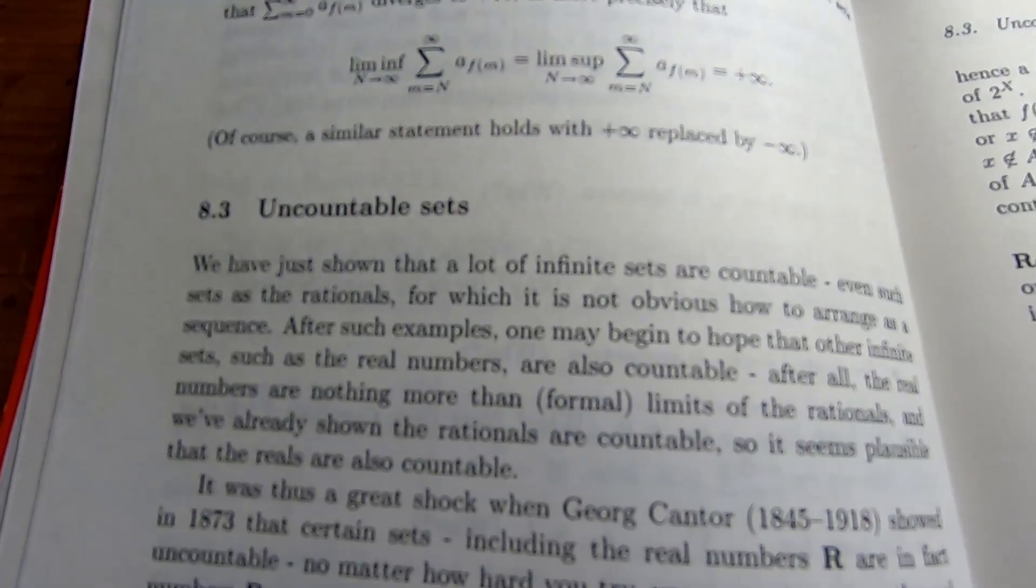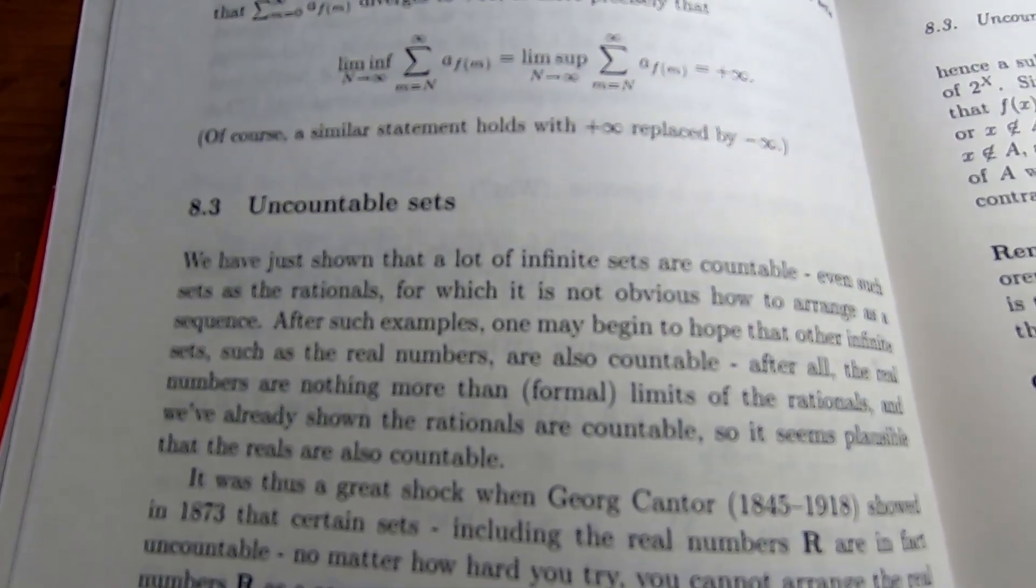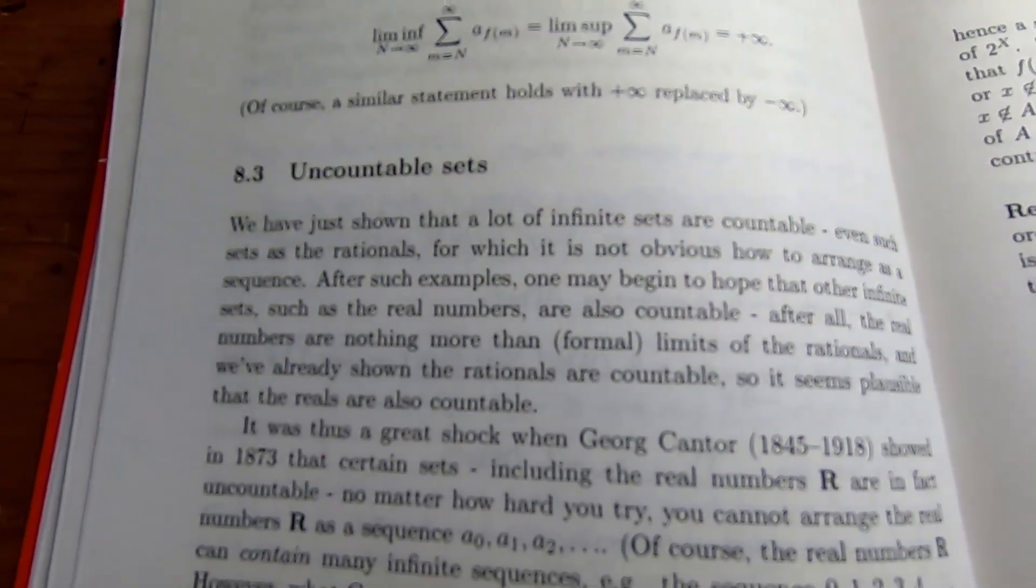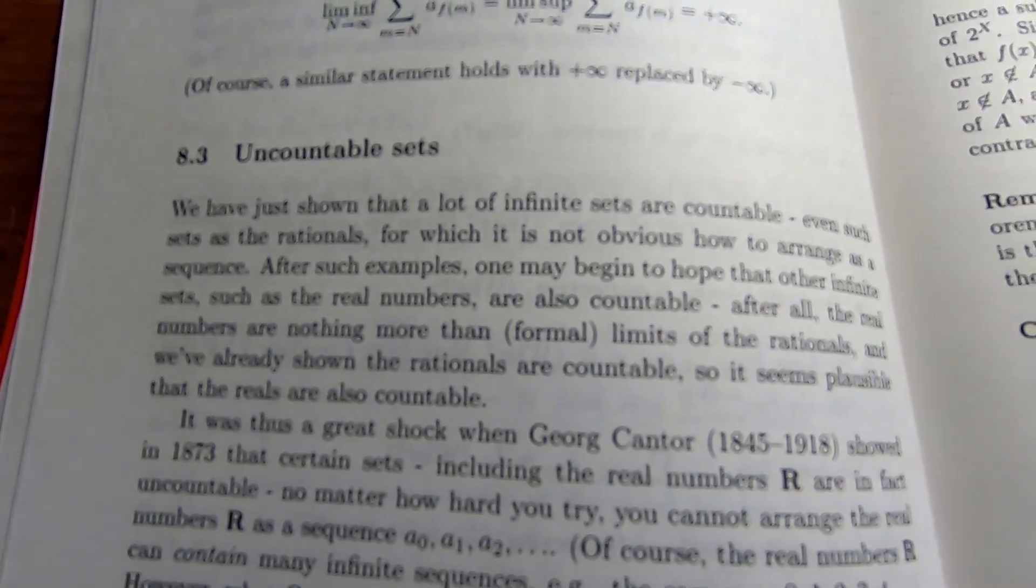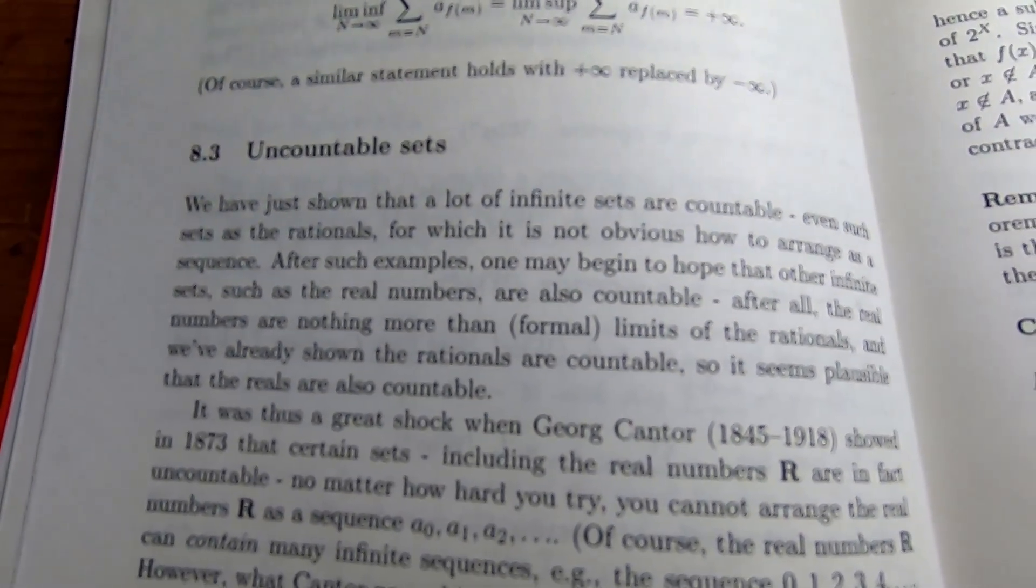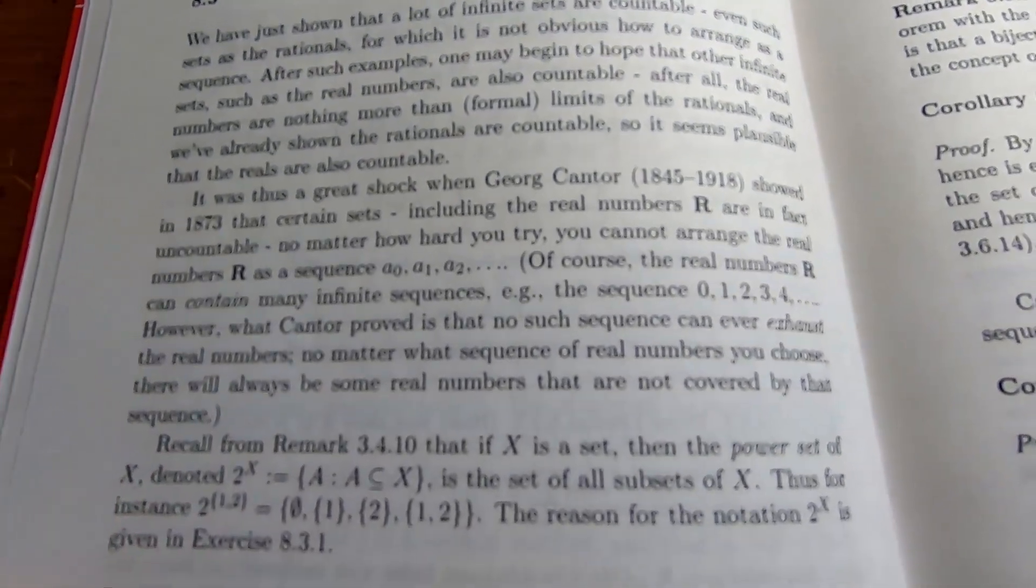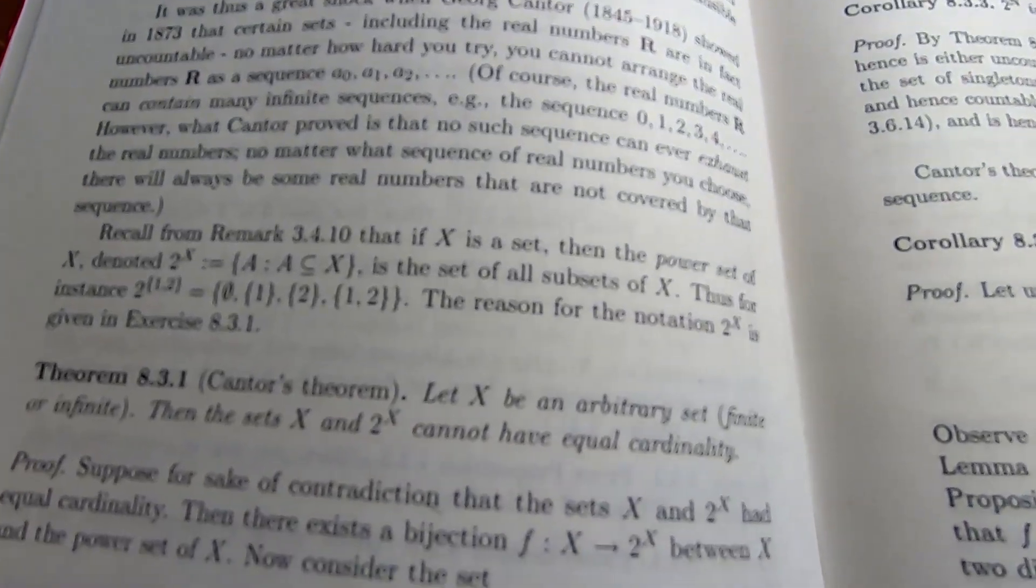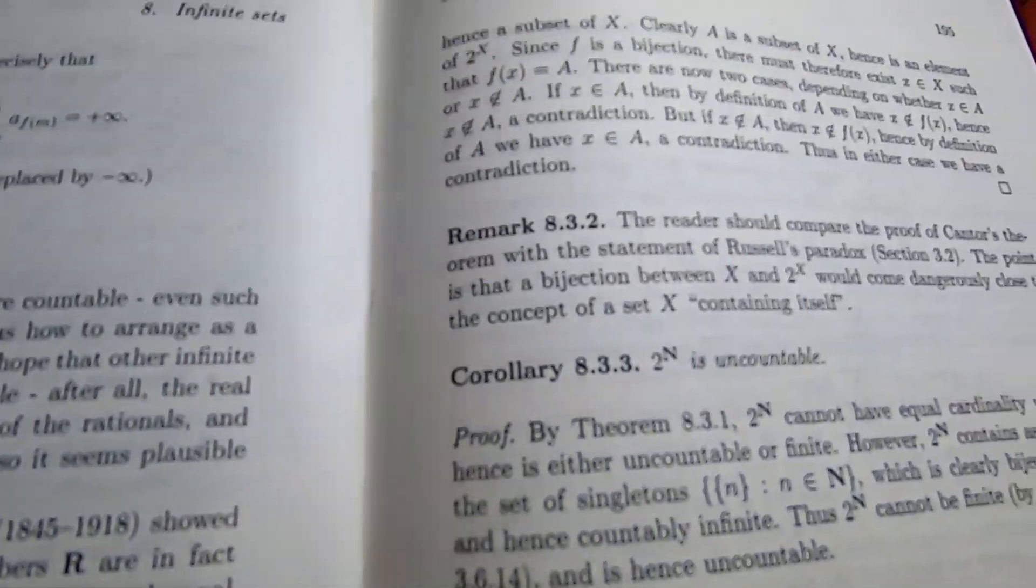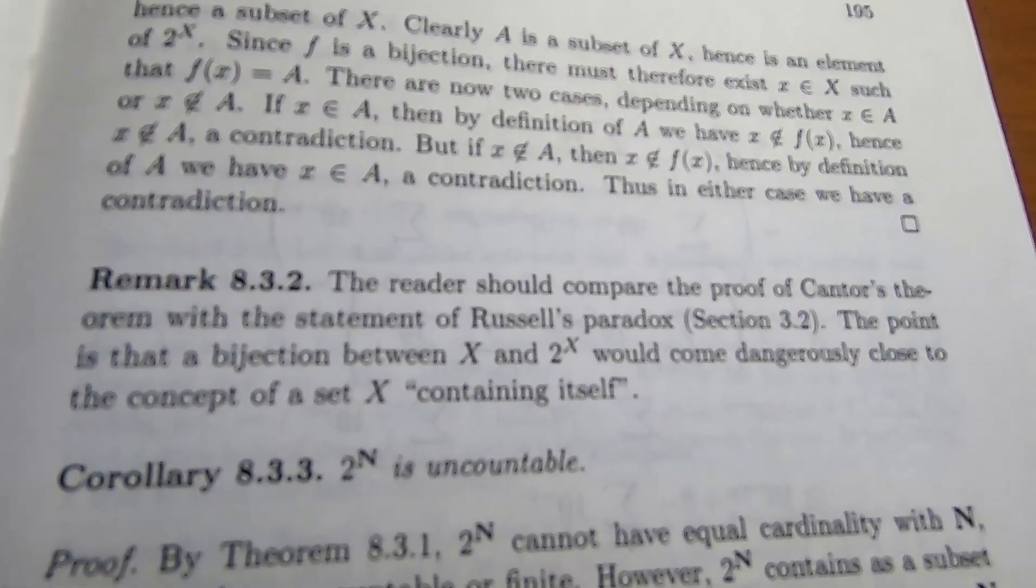This is the section on uncountable sets in the first book. It's a pretty good read. Terence Tao is a really, really good writer. I did not expect that when I got his book. A couple people had left comments, and they were asking if I could take a look at the book. And I'll be honest, I thought it would just be like a regular advanced calculus book. But it's not, it's actually better than most other advanced calculus books.